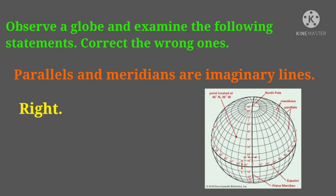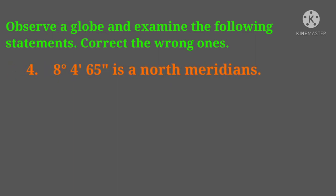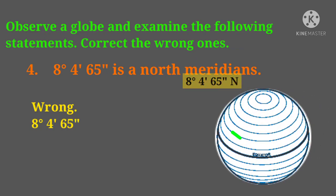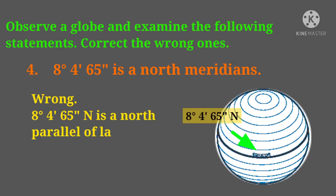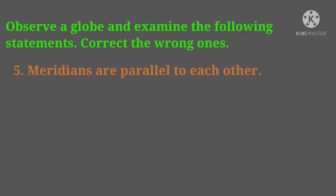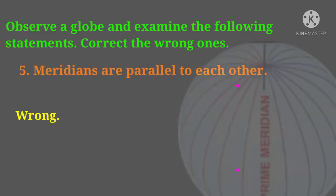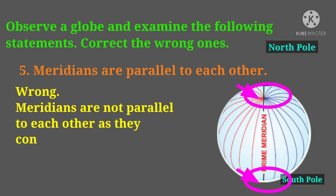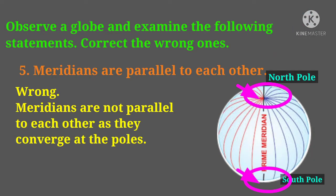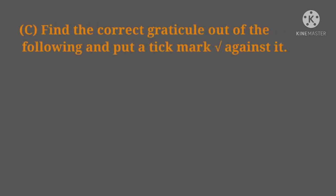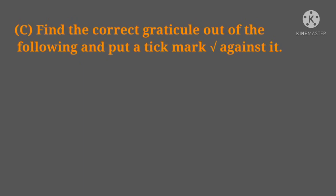Fourth statement: 8 degree 4 minutes 65 seconds is a north meridian. This is wrong — 8 degree 4 minutes 65 seconds north is a north parallel of latitude. Fifth statement: meridians are parallel to each other. The answer is wrong — meridians are not parallel to each other as they converge at the poles.